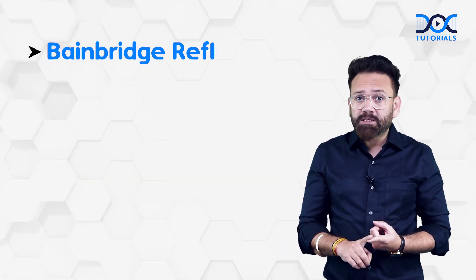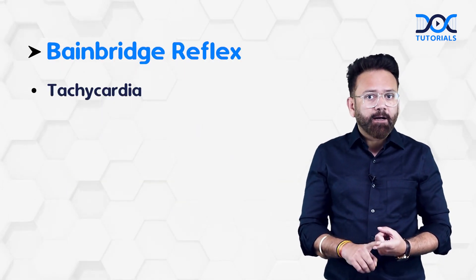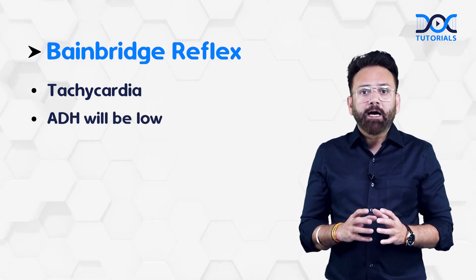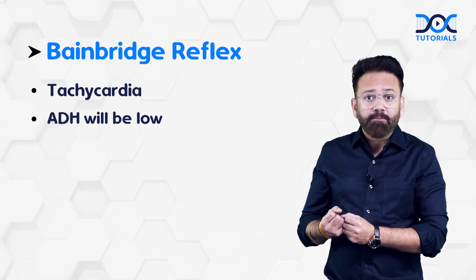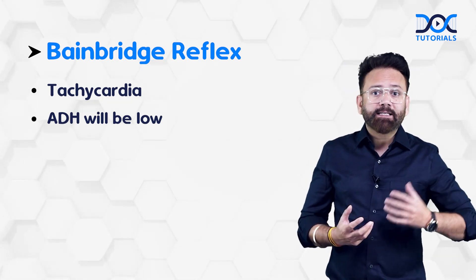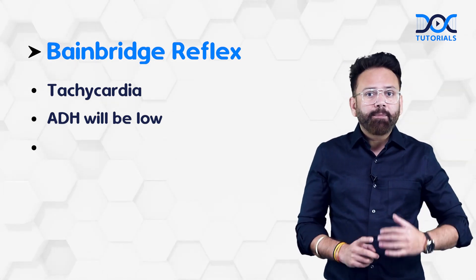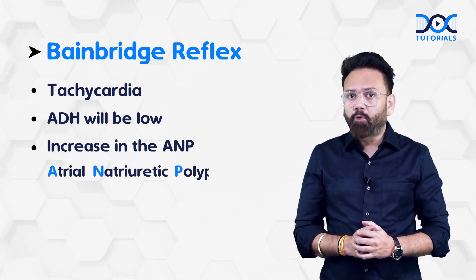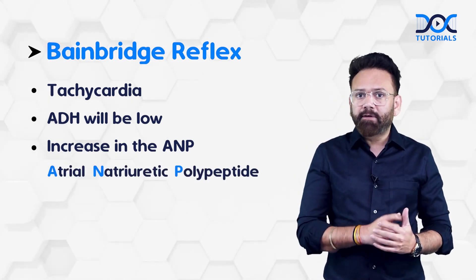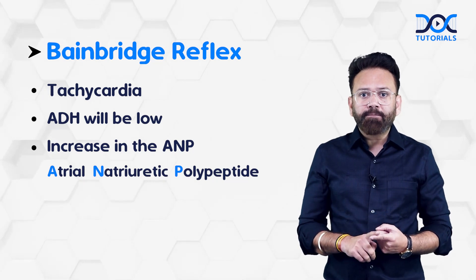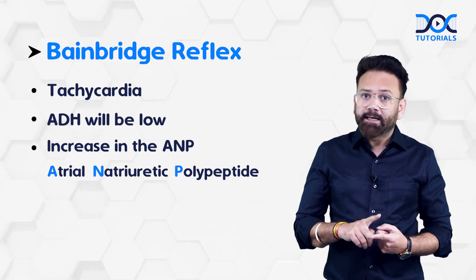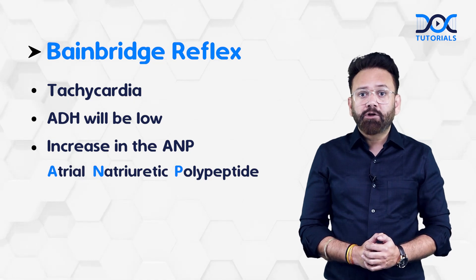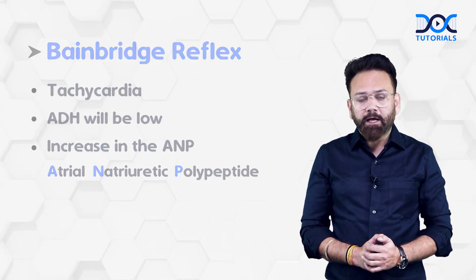So in the Bainbridge reflex, number one, we will get tachycardia. Number two, ADH will be low — so that you don't reabsorb water, since there is already excess fluid. And number three, there will be an increase in ANP, atrial natriuretic polypeptide. So in the Bainbridge reflex, you get tachycardia, decreased ADH, and increased atrial natriuretic polypeptide. Thank you.